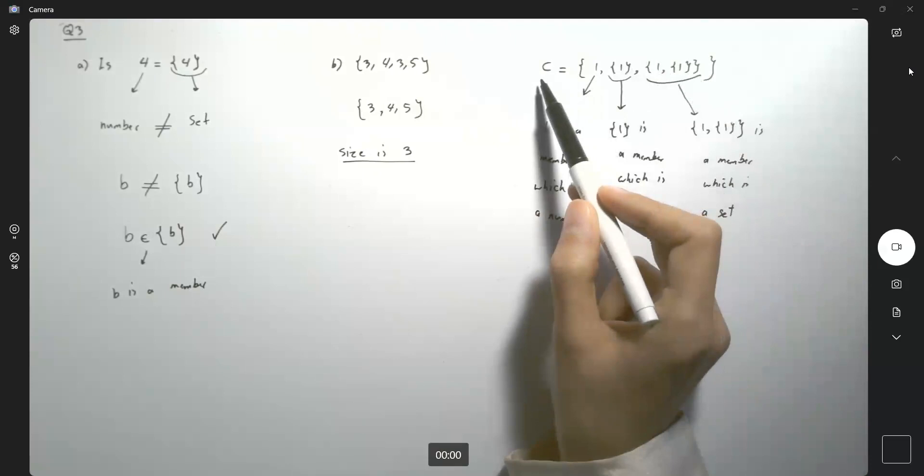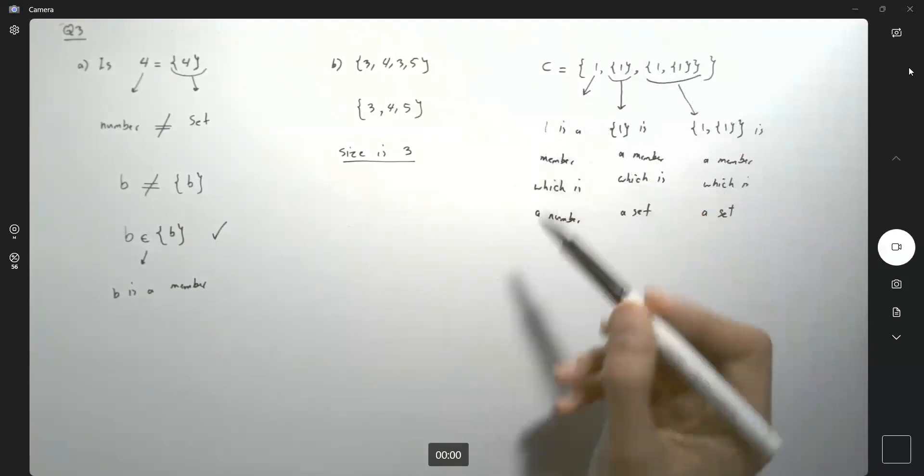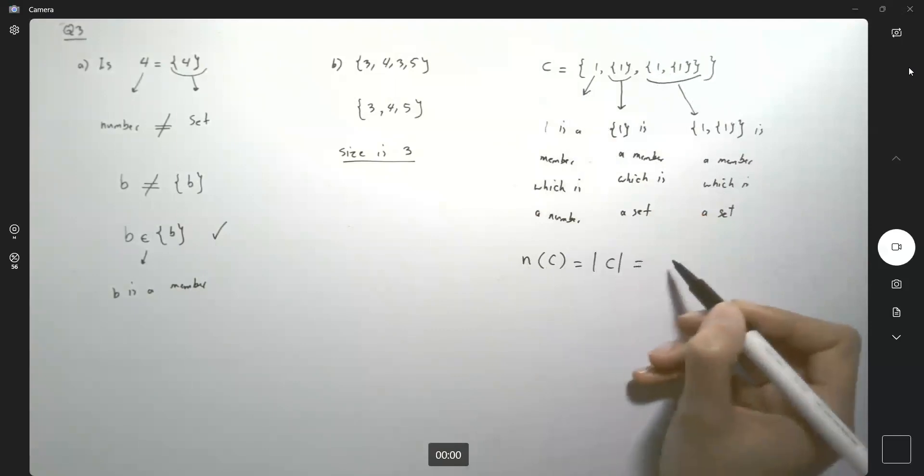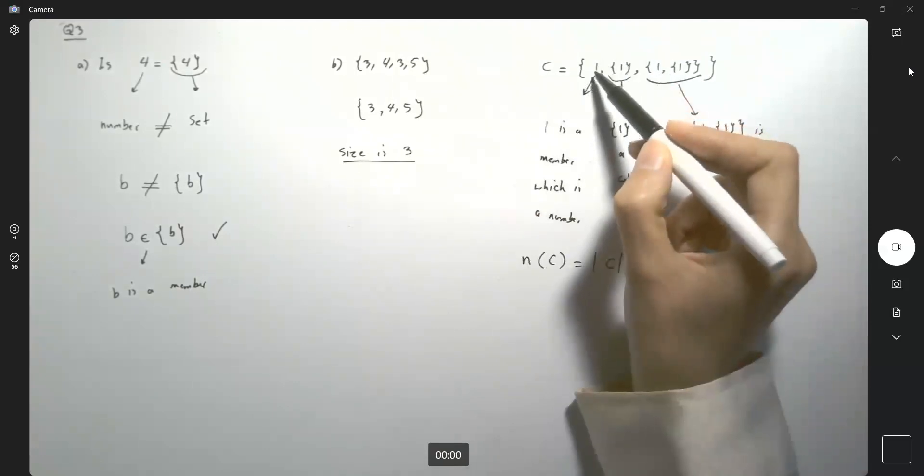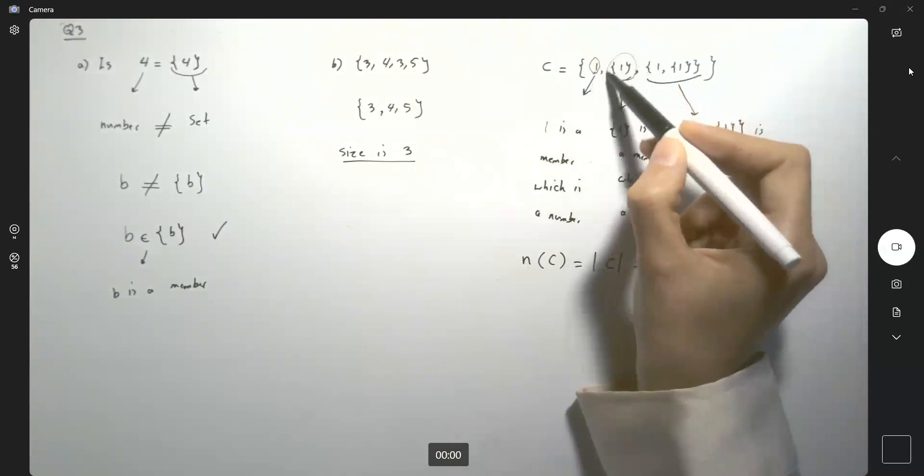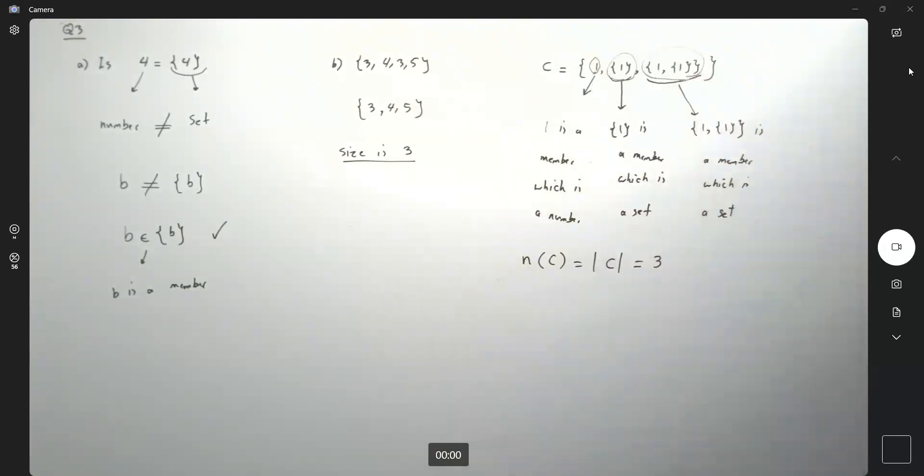But in general, if I ask you what is the cardinality of set C, we're going to say that N of C or the cardinality of C is 3, because it has only three members. Here's the first member, the second member, and the third member.